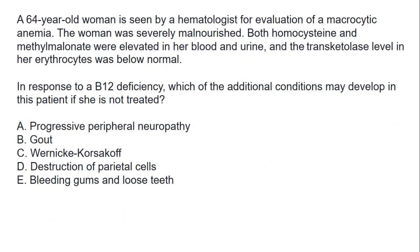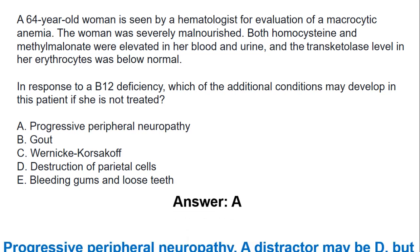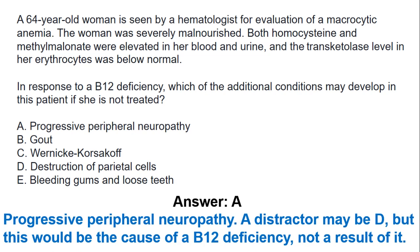The same 64-year-old woman: both homocysteine and methylmalonate were elevated in blood and urine, and the transcobalamin level in her erythrocytes was below normal. In response to a B12 deficiency, which additional condition may develop in this patient if she is not treated? The answer is A. Progressive peripheral neuropathy is a sequela that may occur, but this would be the cause of B12 deficiency, not a result of it.